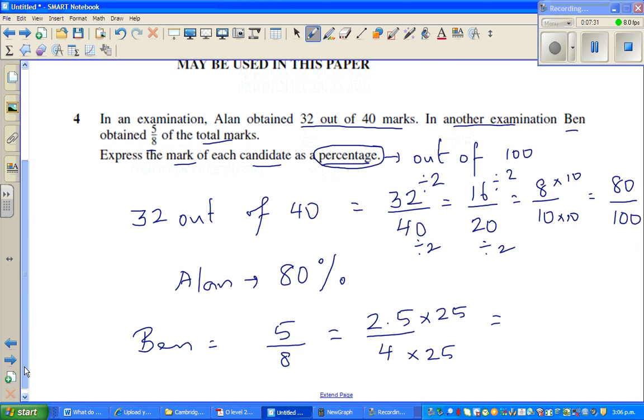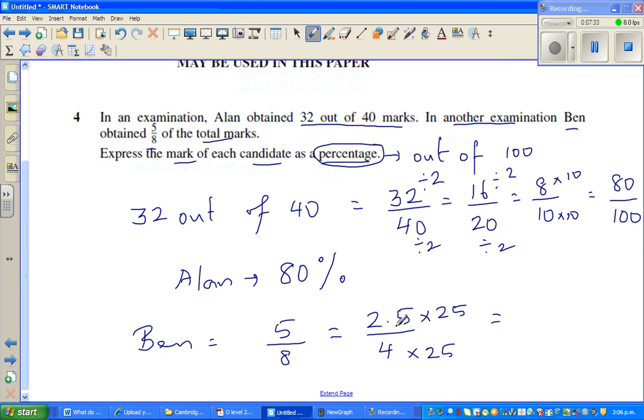So this is 2.5 times 25. So I go 25 times 2 is 50. And then you have got 25 times half, 25 times 0.5, it's 12.5. So 25 times 2 is 50. And 25 times 0.5 is 12.5. So 60 and 12.5 is 62.5 out of 100.